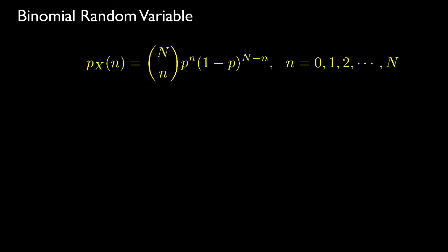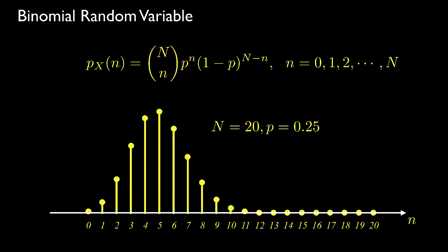A binomial random variable results when we run N Bernoulli trials and count the number of successes, where each success occurs with probability p. For example, we could flip a coin 20 times and count the number of heads. For 20 trials with success probability 0.25, the probability mass function is zero for all integers outside the interval from 0 to N.